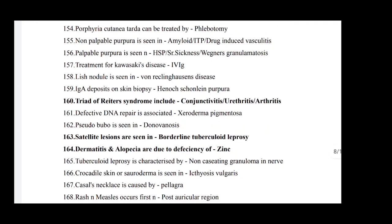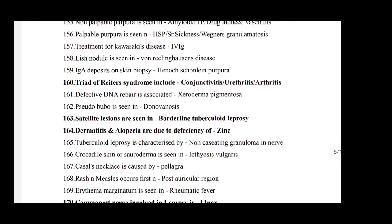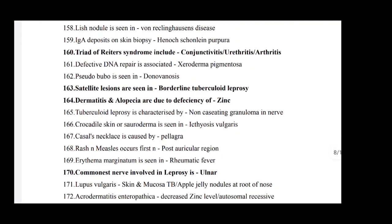Patient with abdominal pain, vomiting, psychiatric symptoms and visual hallucination: diagnosis is intermittent porphyria. Porphyria cutanea tarda can be treated by phlebotomy. Non-palpable purpura is seen in amyloid, ITP, and drug-induced vasculitis. Palpable purpura is seen in HSP and serum sickness, Wegener's granulomatosis. Treatment for Kawasaki disease is IV immunoglobulin. List nodule is seen in neurofibromatosis (Von Recklinghausen's disease). IgA deposit on skin biopsy: Henoch-Schonlein purpura.